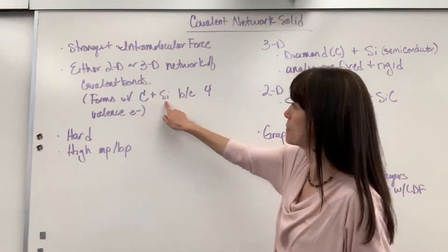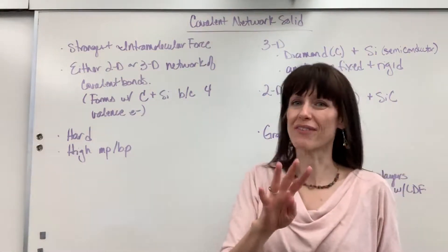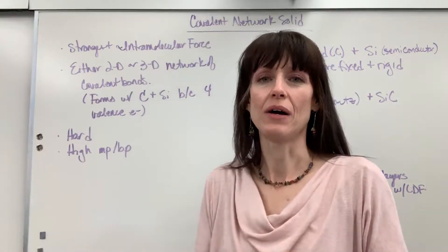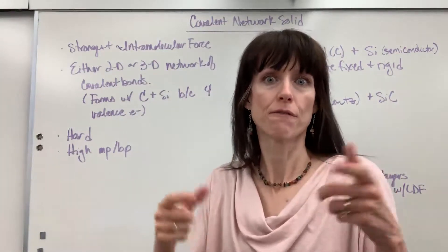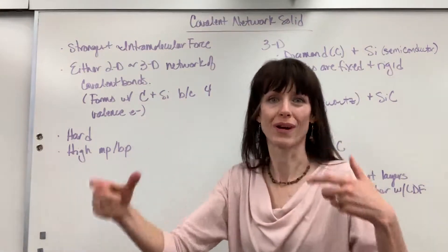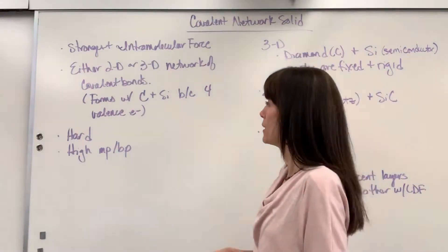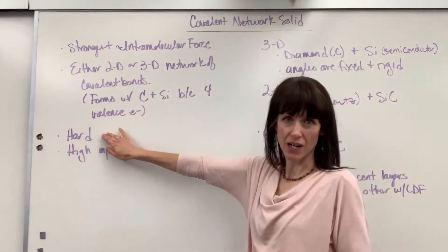It forms with carbon and silicon because they only have four valence electrons. And so they're able to bond with themselves four different times. So carbon could bond with four other carbons in a 3D network. They're very, very hard.